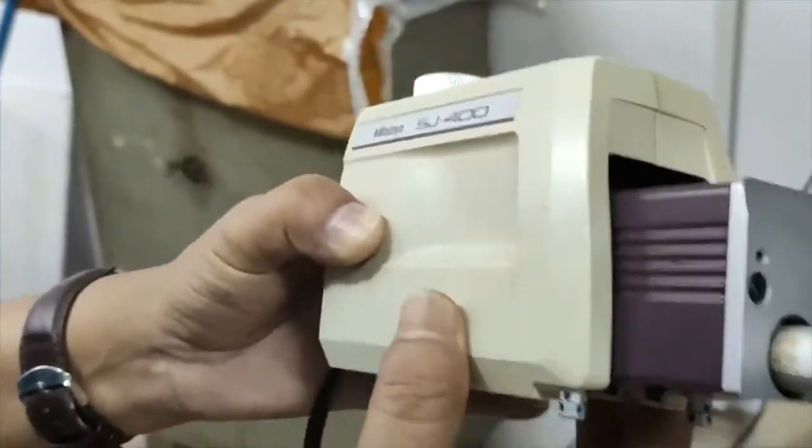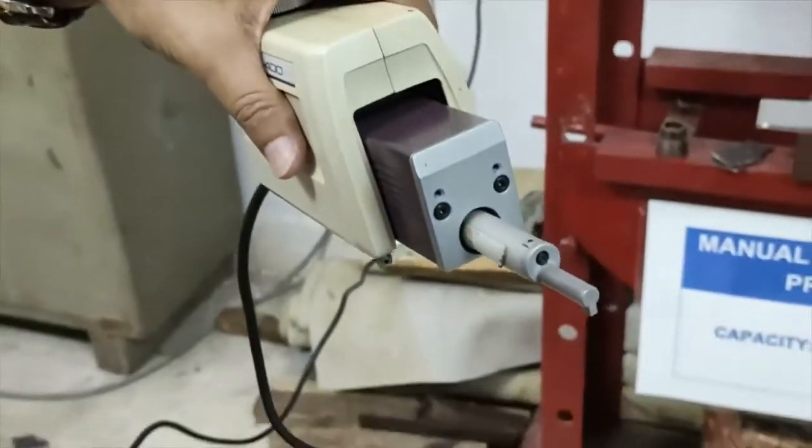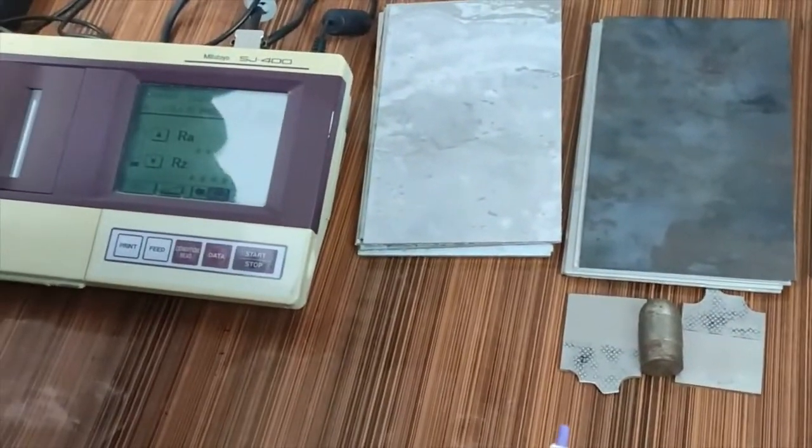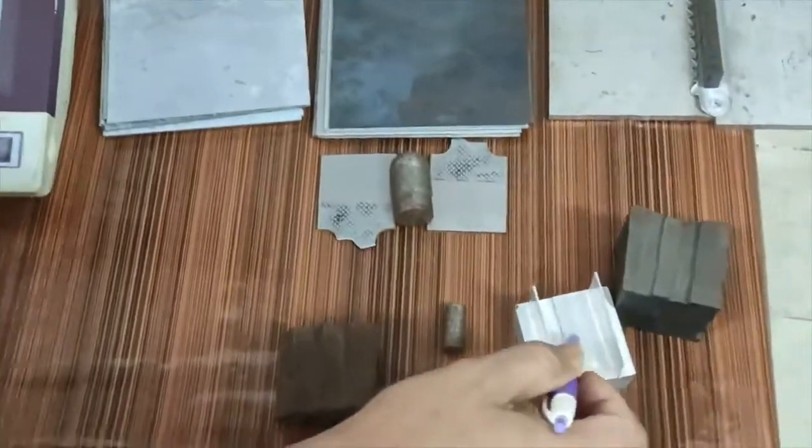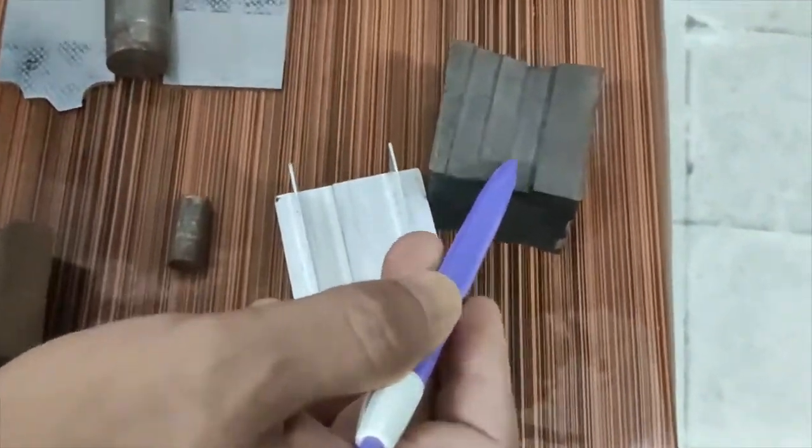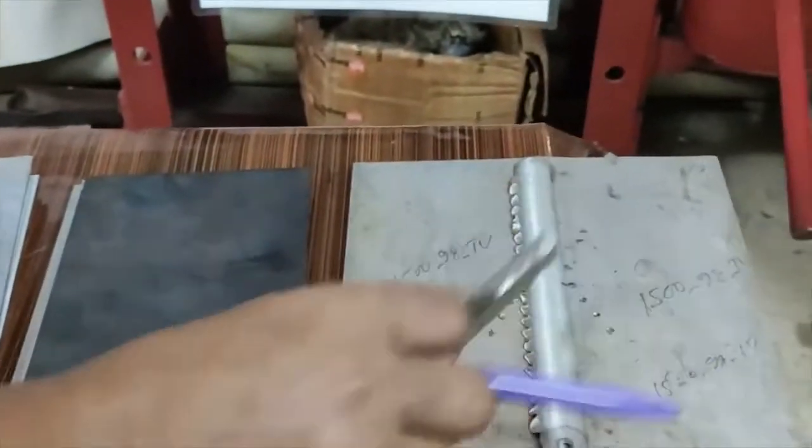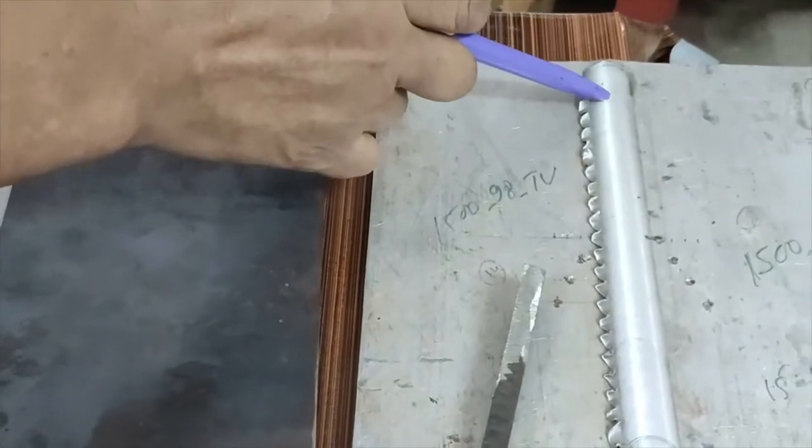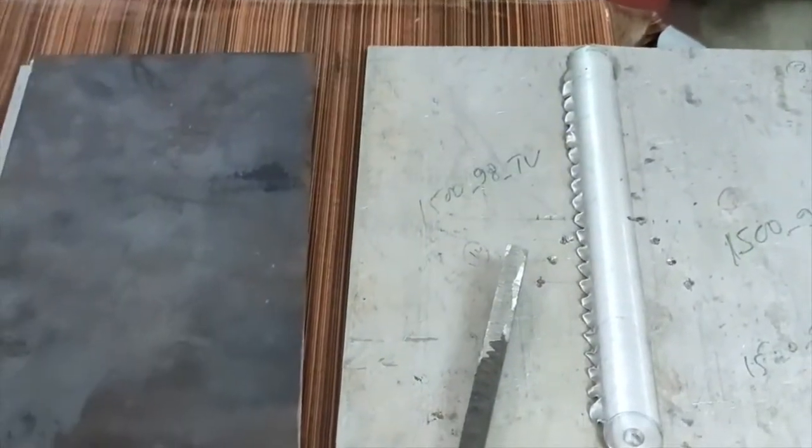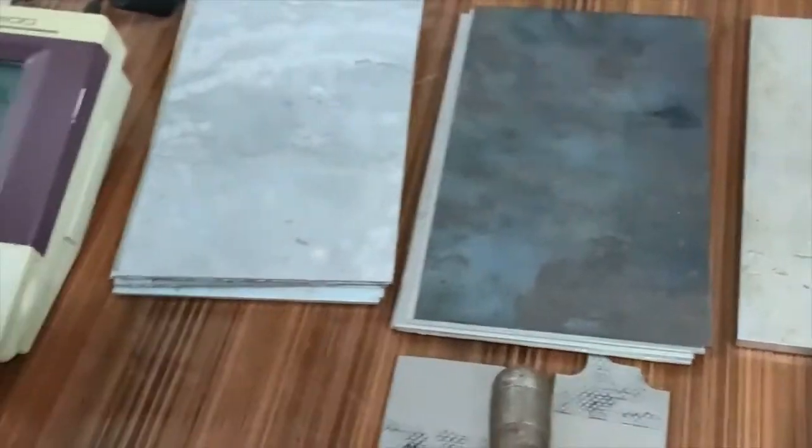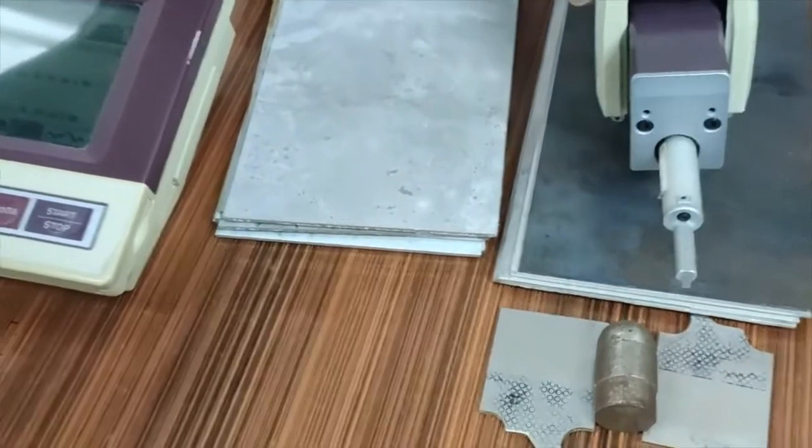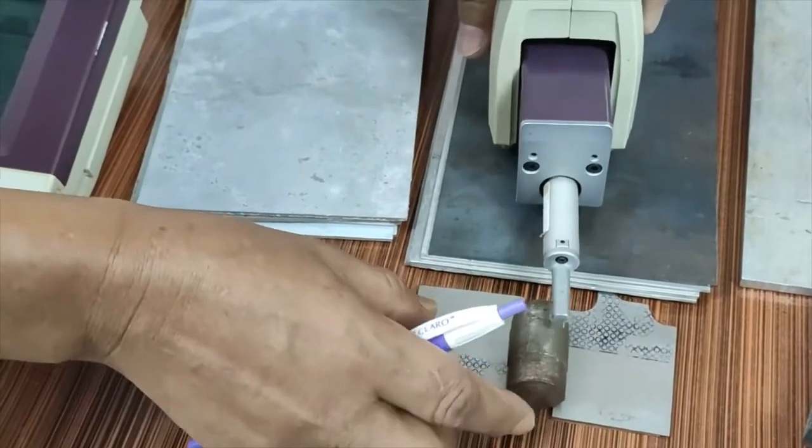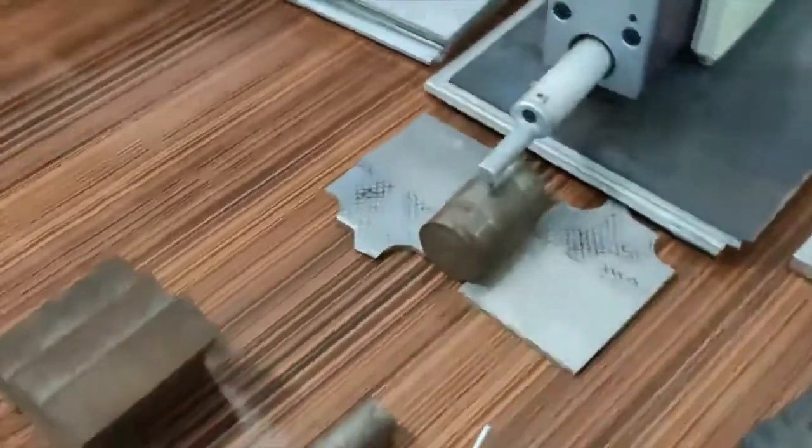To measure it we'll choose different surfaces. This is a turning surface, this is milling of aluminum, and this is a shaping surface. This is a grinding surface, and this is friction stir welding surface. These different surfaces will be measured with the help of this surface roughness tester.